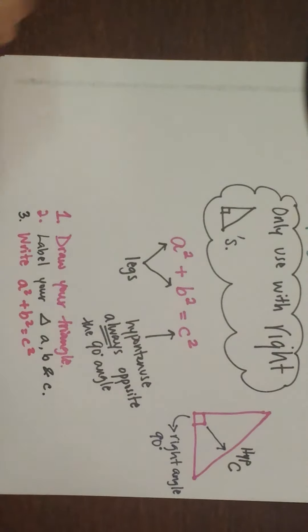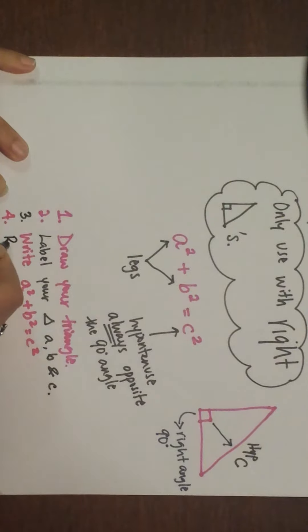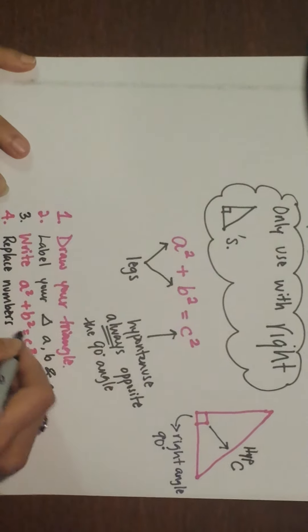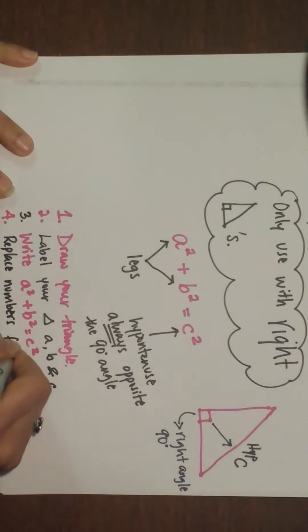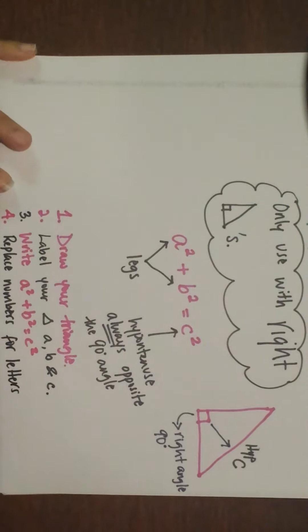I've run out of little space. I think I've got space for one more actually. Step number four: replace numbers for letters.